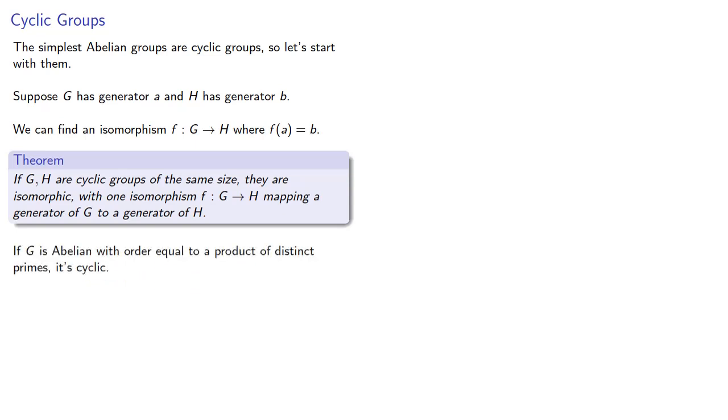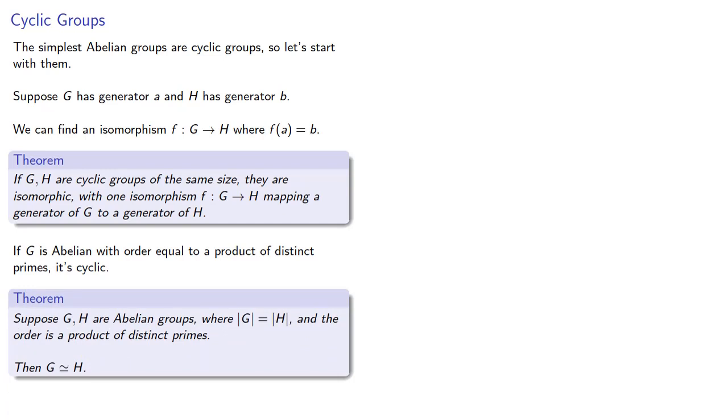Now if G is abelian with order equal to a product of distinct primes, it's cyclic. That's something we proved earlier. And consequently, if G and H are abelian groups where the order of G is the order of H and the order is a product of distinct primes, then G is isomorphic to H.